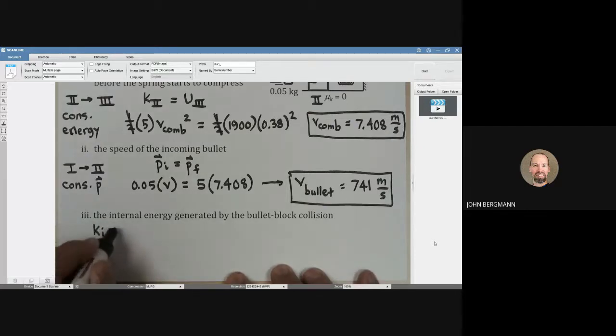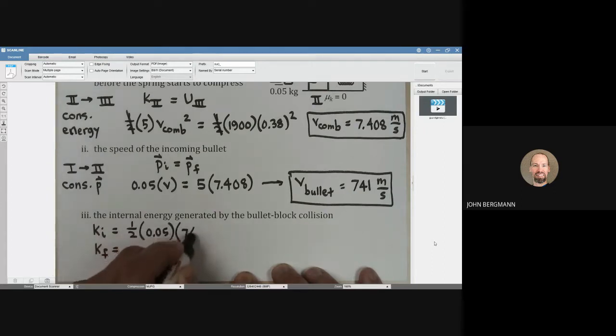To do that, you find the initial kinetic energy of the bullet, and then you find the final kinetic energy that the bullet and block have just as they start to slide, and the difference between those is the internal energy generated. So here we go, one half. The bullet has a mass of 0.05 kilograms, and its speed was 741. We're going to square that.